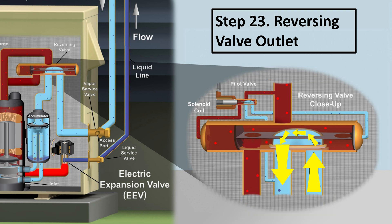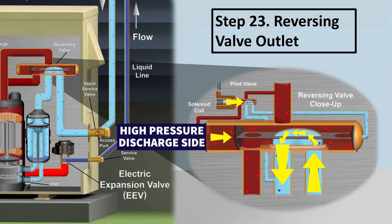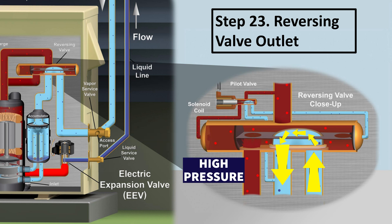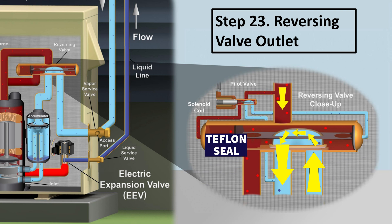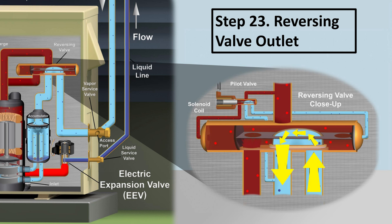The solenoid valve coil is not powered. The spring pressure is pushing the U-shaped slide over. High pressure gas shoves the entire slide in one direction — high pressure versus low pressure. The high pressure also pushes down on the U-shaped slide to keep the Teflon seal completely pushed down and sealed. Then you have your low pressure, low temperature vapor refrigerant traveling through.